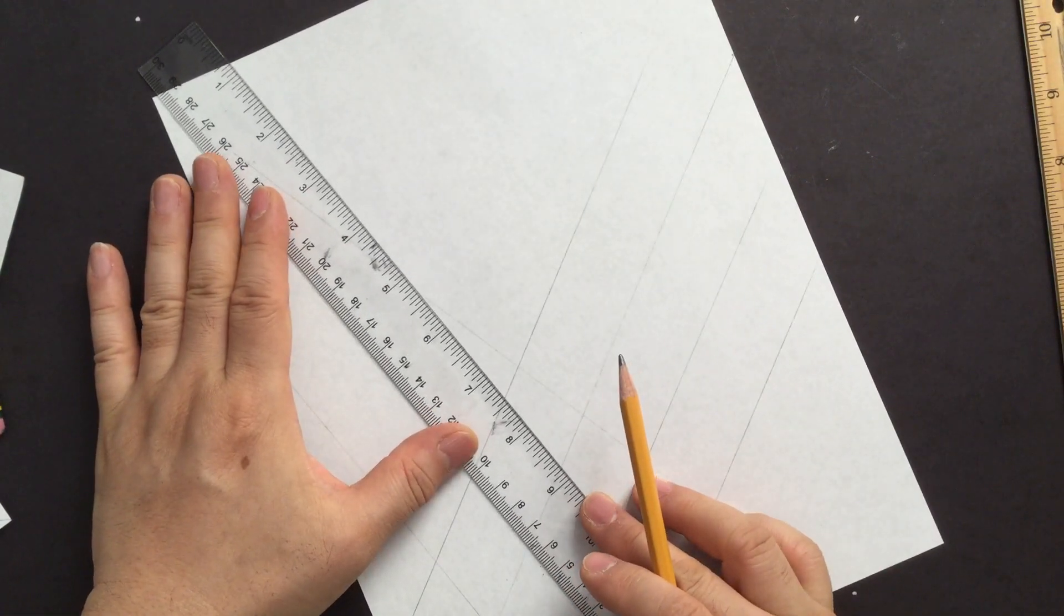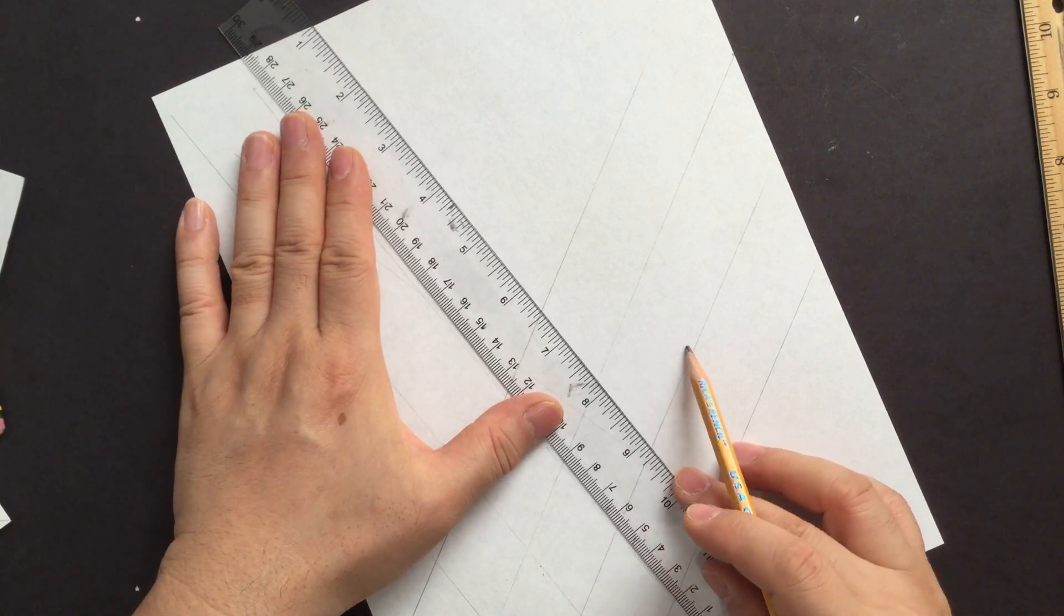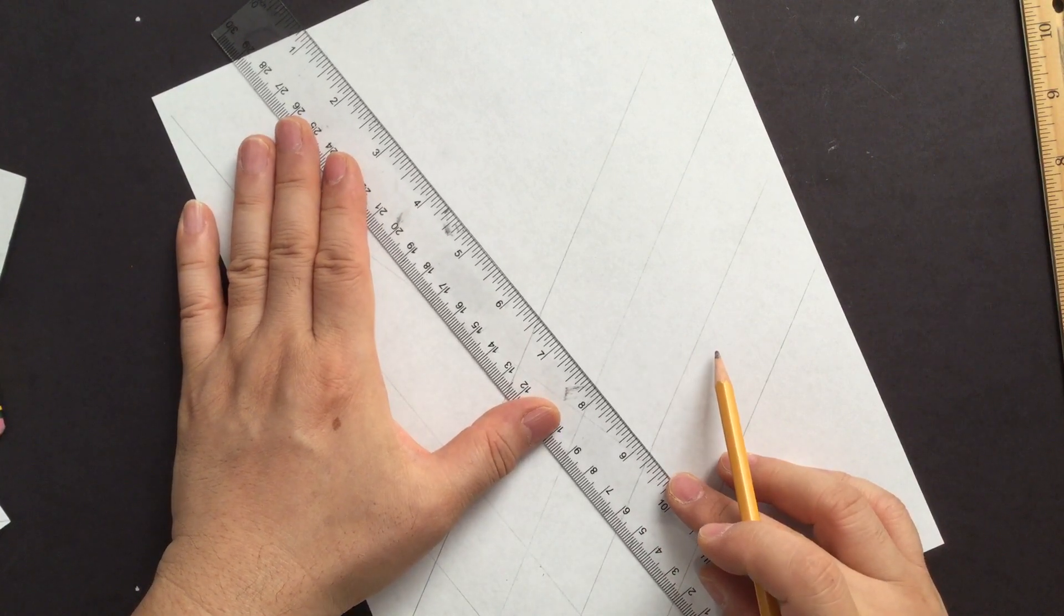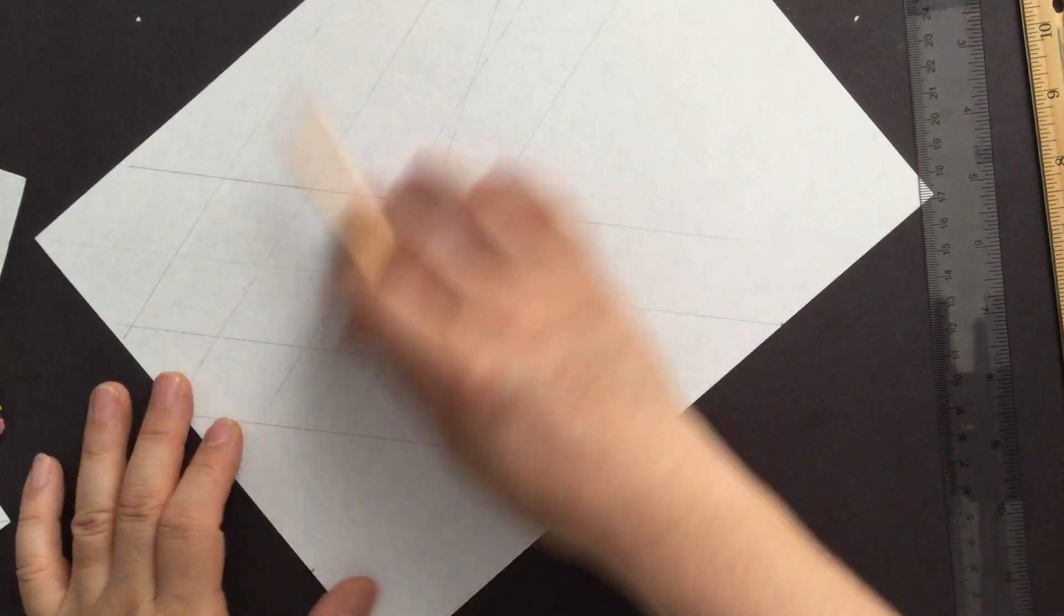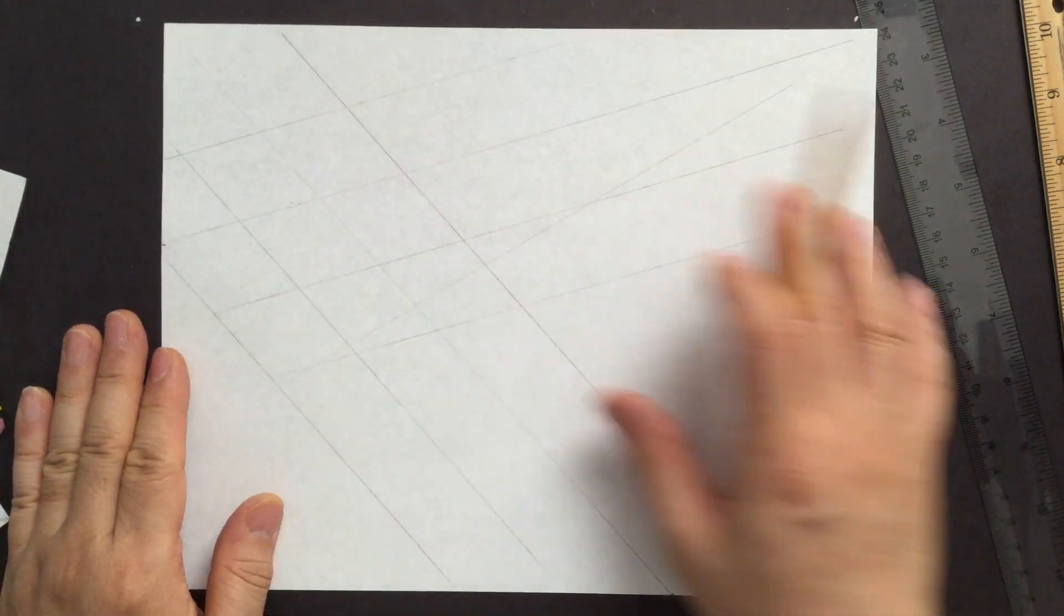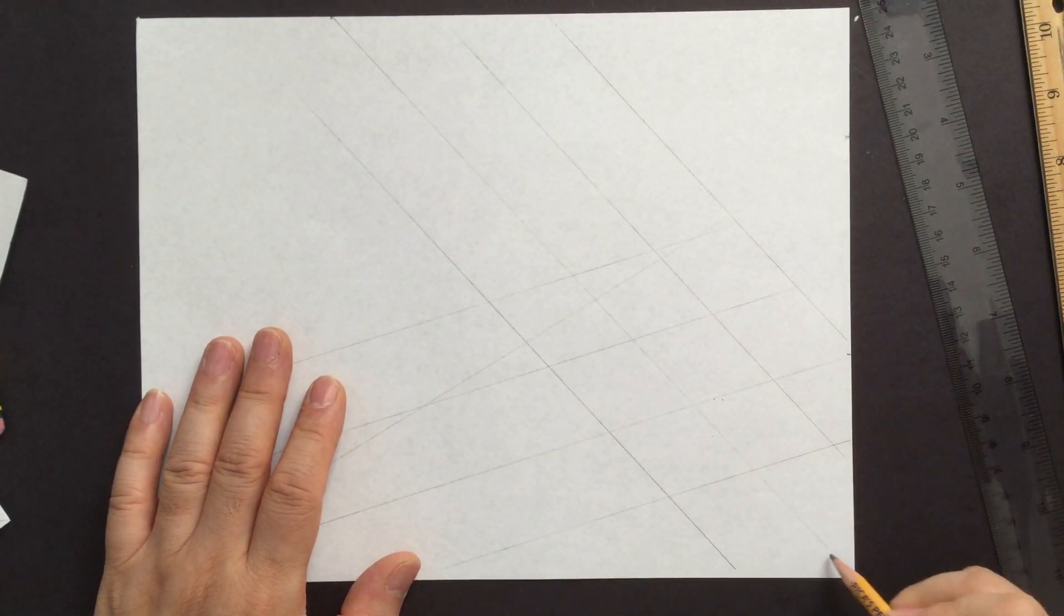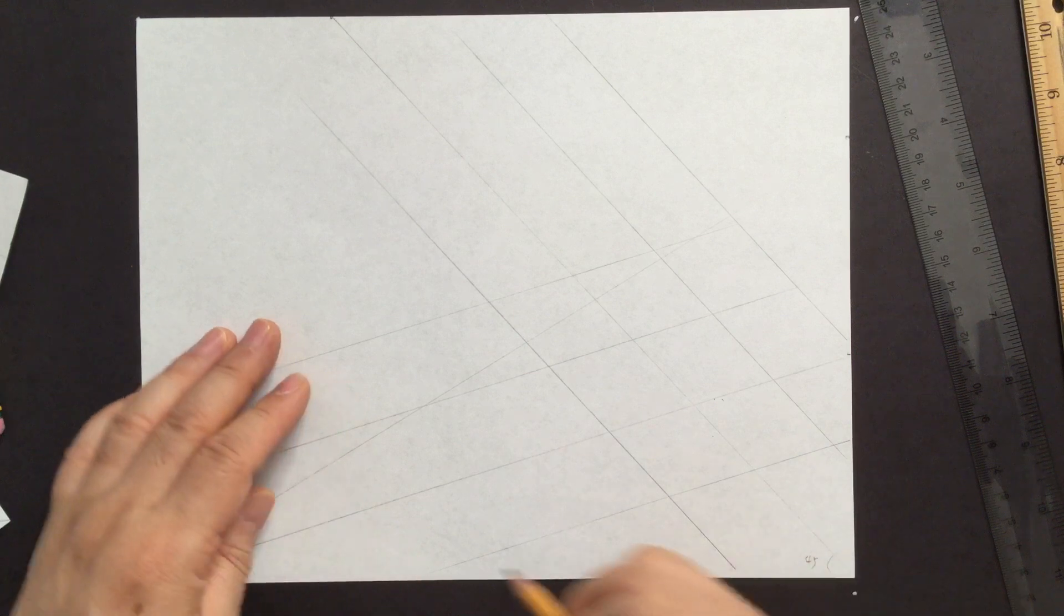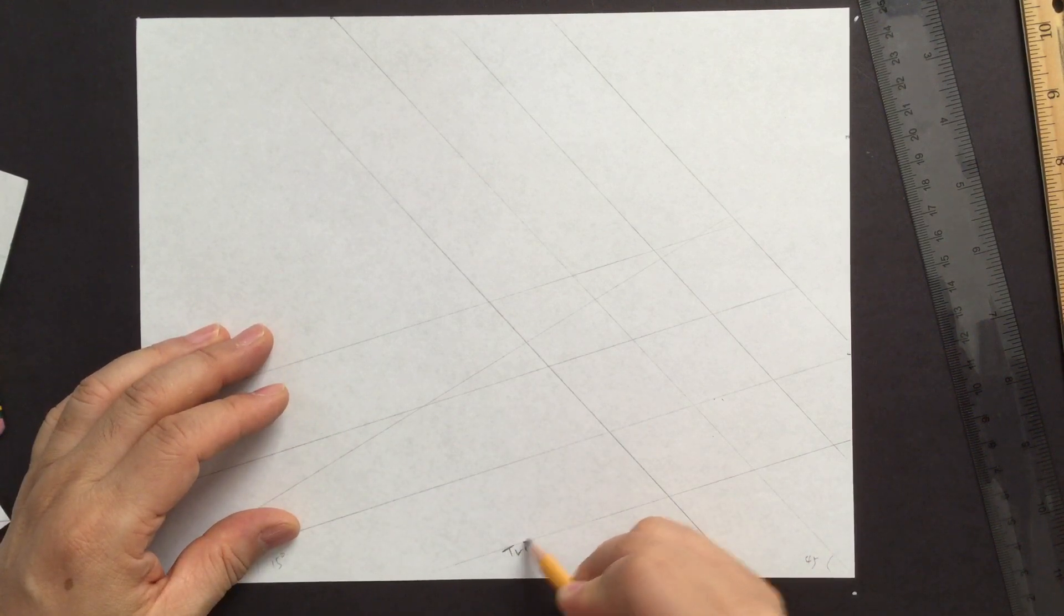So once you become an expert, then get a proper protractor and everything that you can do it accurately. So continuing this, and you will create a trimetric. So again, 45 to 15. And so this is a trimetric.